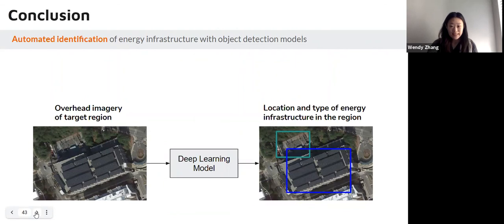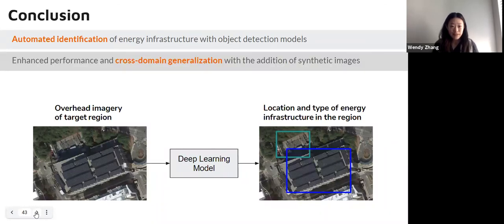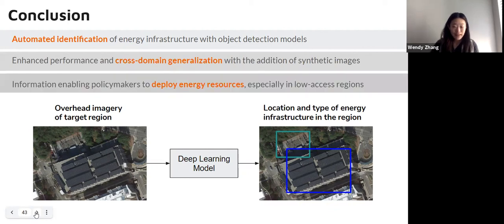In conclusion, there are a few points our project was able to address. Firstly, the automated identification of energy infrastructure through satellite images enables automation of this whole process by addressing the scarcity of data. Secondly, we were able to enhance performance as well as cross-domain generalization by adding in synthetic images of wind turbines. Finally, this information enables policymakers to deploy energy resources, especially in low-access regions, to expand energy access.